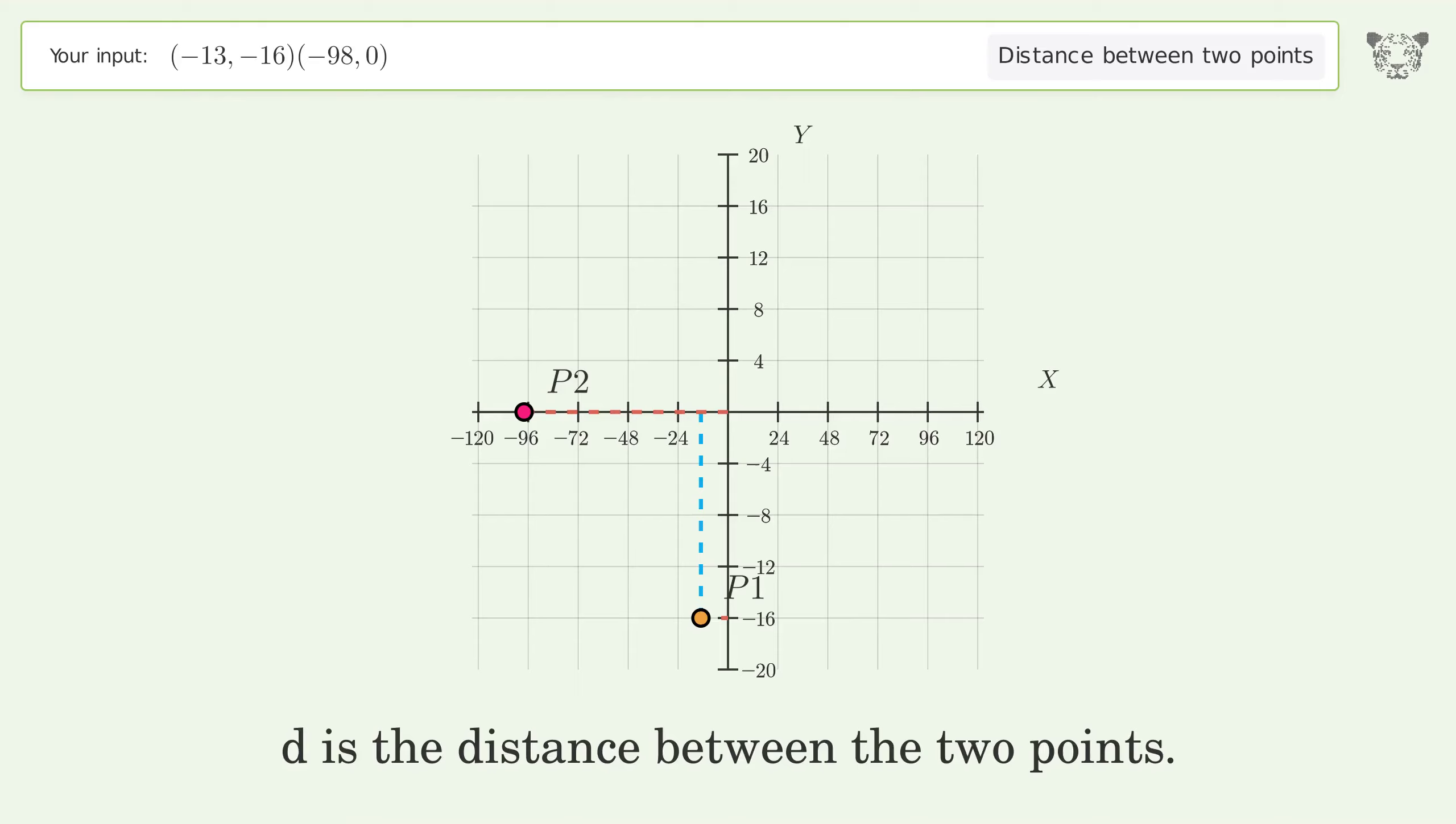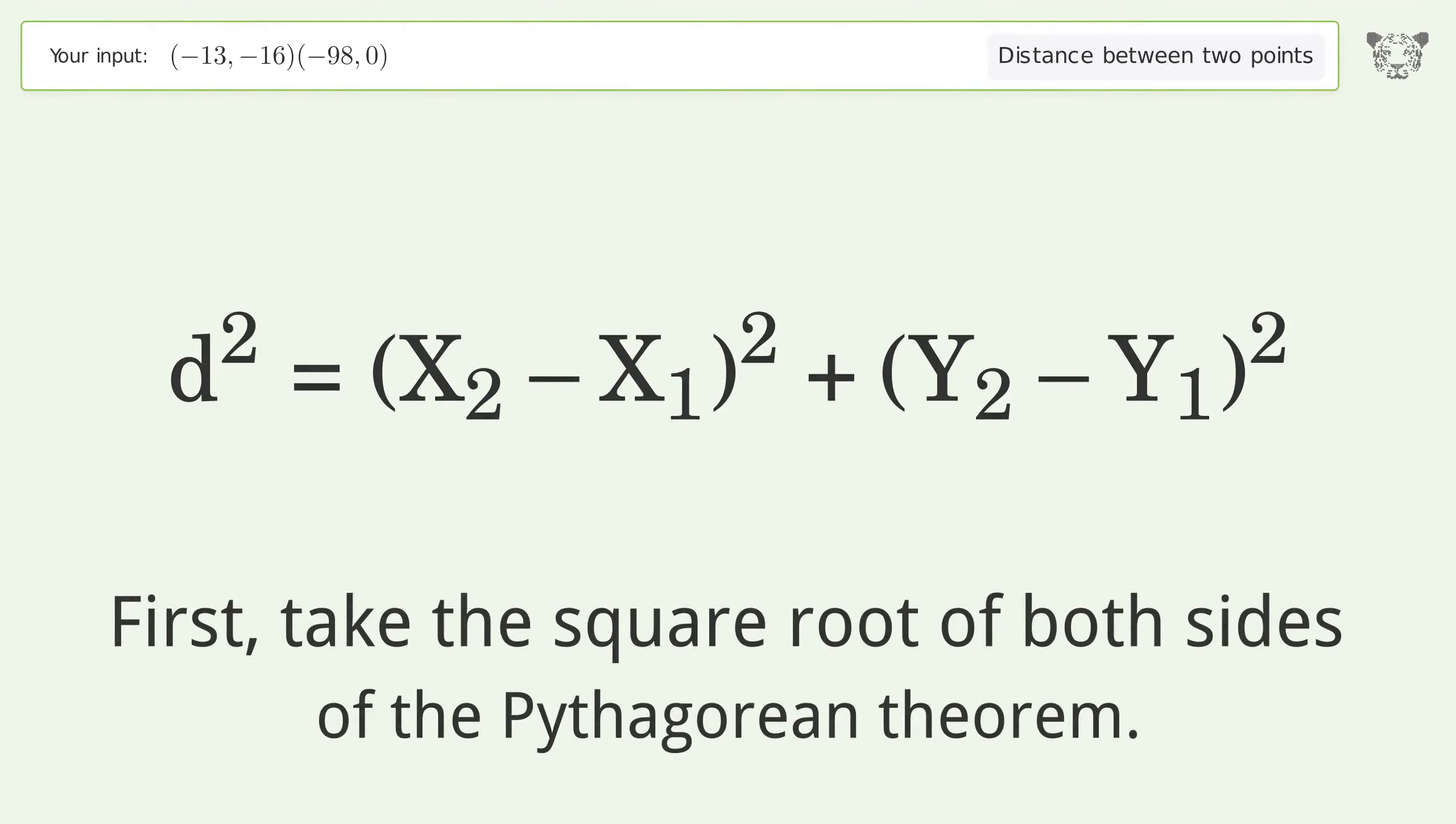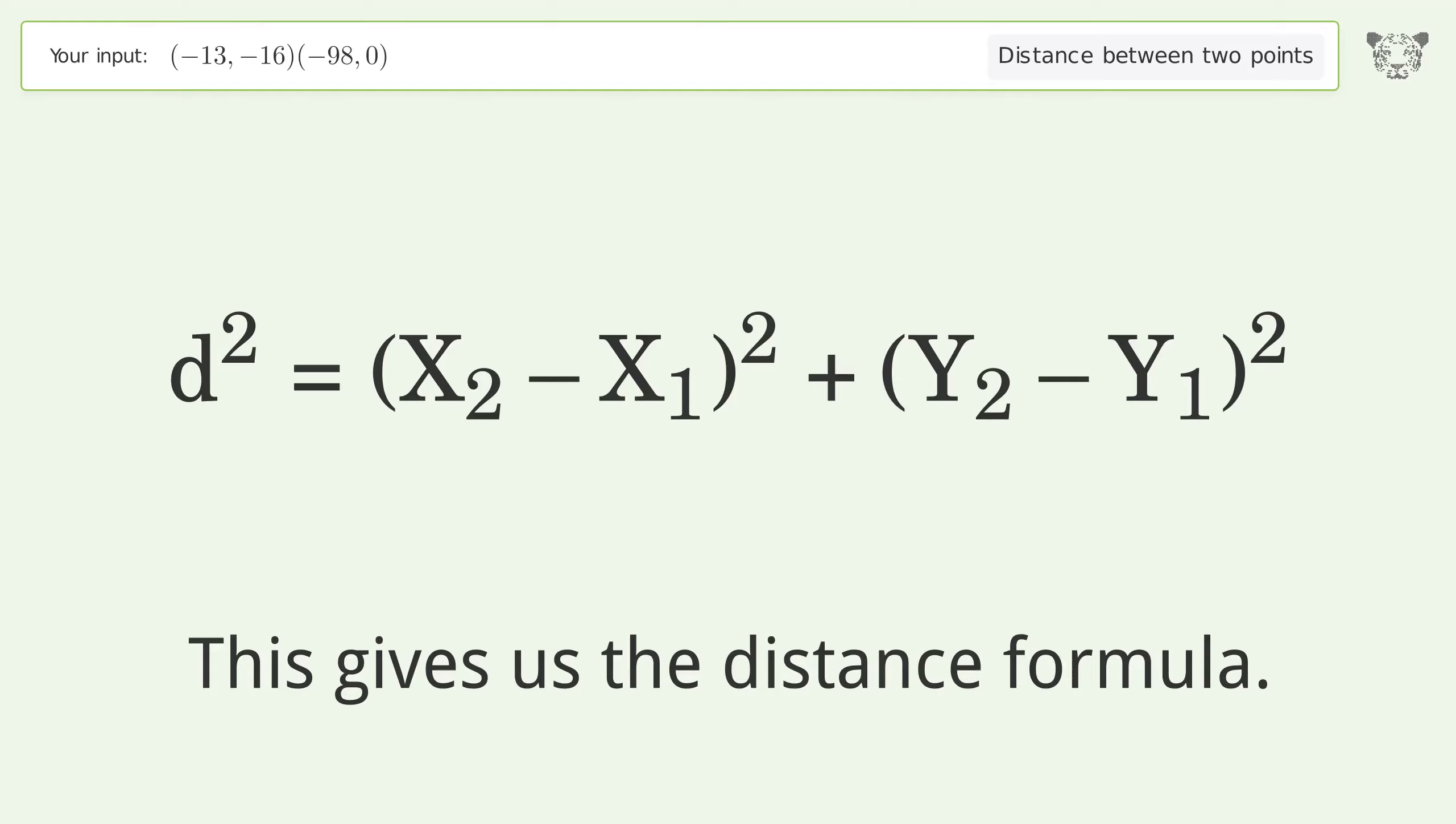d is the distance between the two points. First, take the square root of both sides of the Pythagorean theorem. This gives us the distance formula.